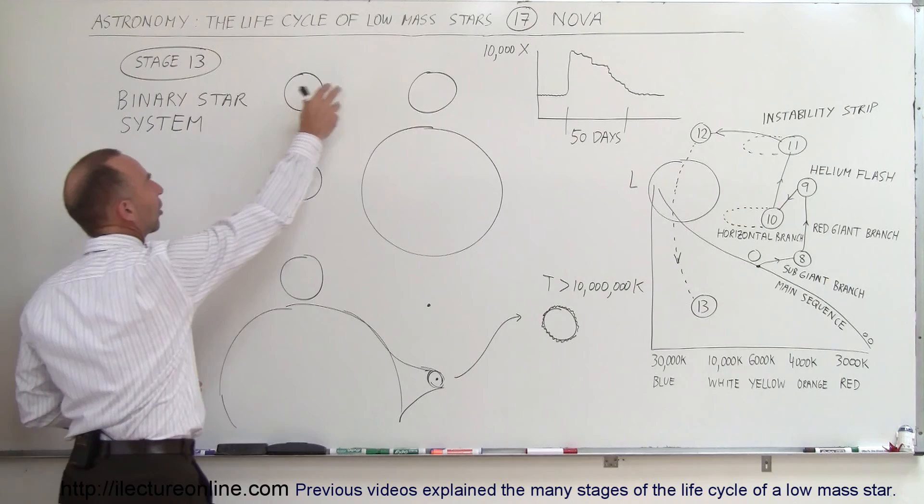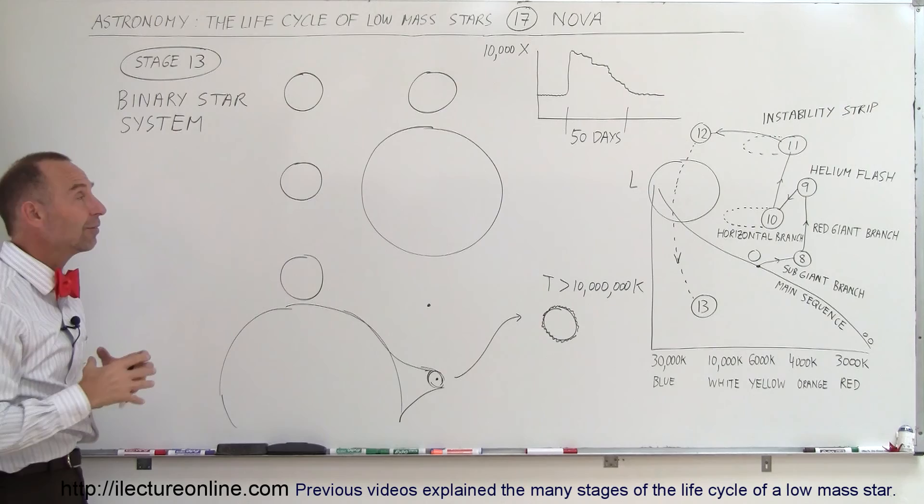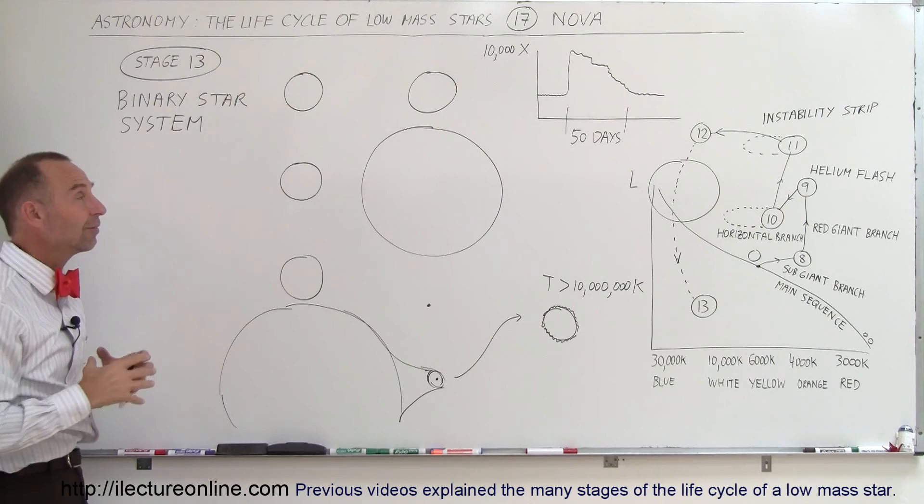Let's say we have a binary star system with two regular stars. This star is slightly bigger than this one. If it's bigger, it will spend less time on the main sequence. If it spends less time on the main sequence, it will become a red giant first.